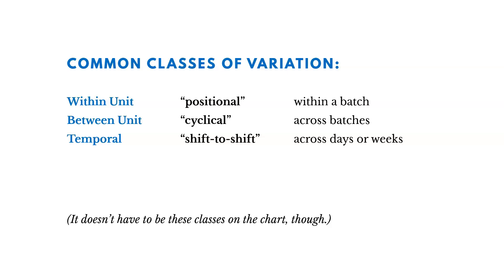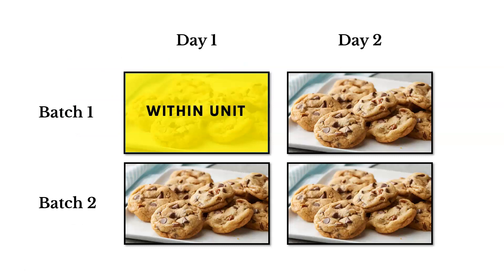To better understand within unit, between unit, and temporal variation, let's think about making cookies. Let's say we make two batches of cookies over two days, two batches each day. If we see variation within batch one on day one — within a batch — we call that within unit variation. Maybe some cookies are overcooked and some are undercooked. That might suggest a problem with the oven, like one side being hotter than the other. Understanding the class of variation gives us clues about where a problem might exist.